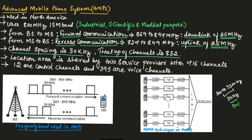AMPS uses frequency modulation technique to modulate analog voice signals, which are then passed to FDMA. FDMA uses the 25 megahertz band for both uplink and downlink. The signal from FDMA is then given to the base station.